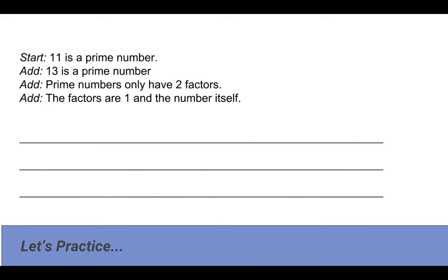If you were working with your students, here's a sample you could use. The starting sentence is '11 is a prime number.' Then we add '13 is a prime number,' 'prime numbers have only two factors,' and 'the factors are one and the number itself.' We would then ask students in pairs to write a combined sentence about prime numbers 11 and 13, and once they've written one, write it in two to three other ways using these particular ideas but with a different weaving each time.